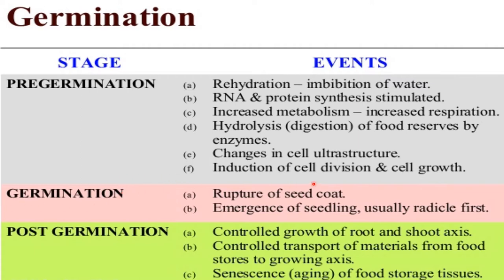In case of germination, the rupture of seed coat and emergence of seedling occurs. Usually the radicle will emerge first.